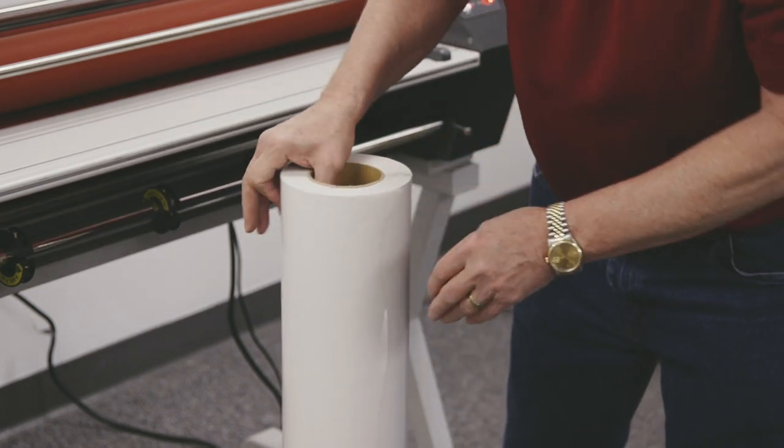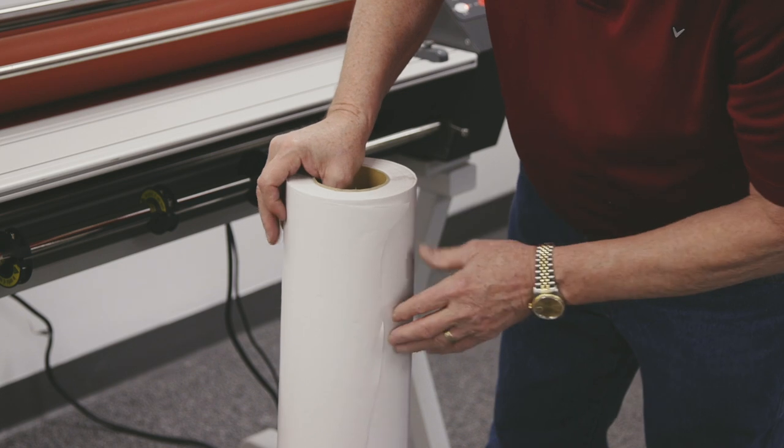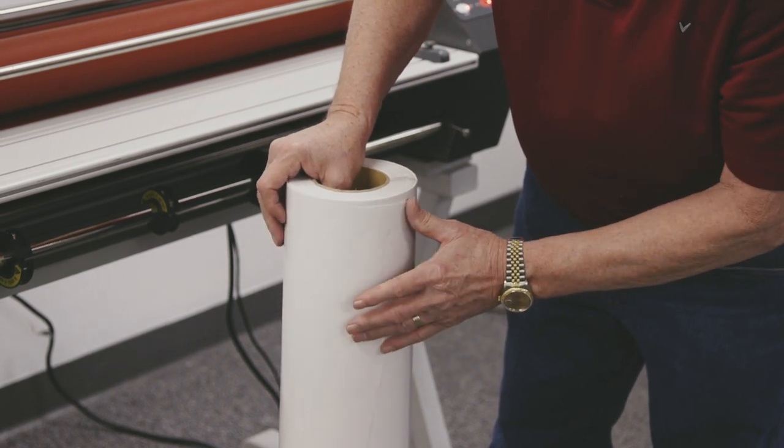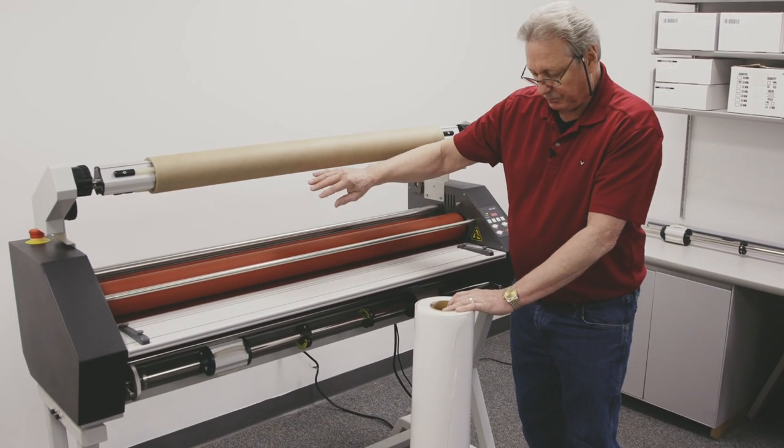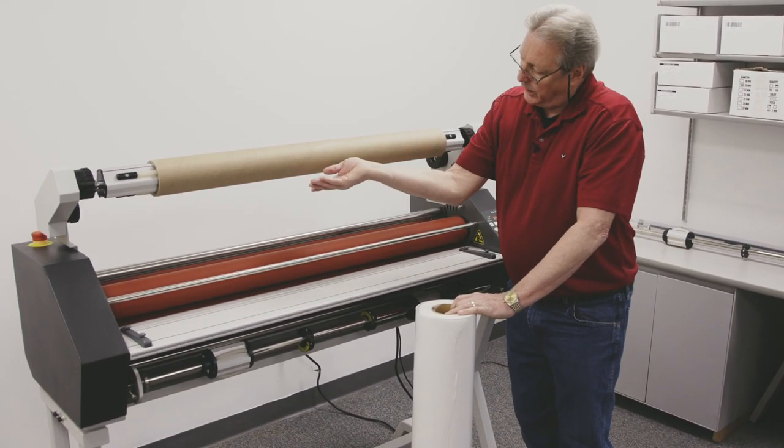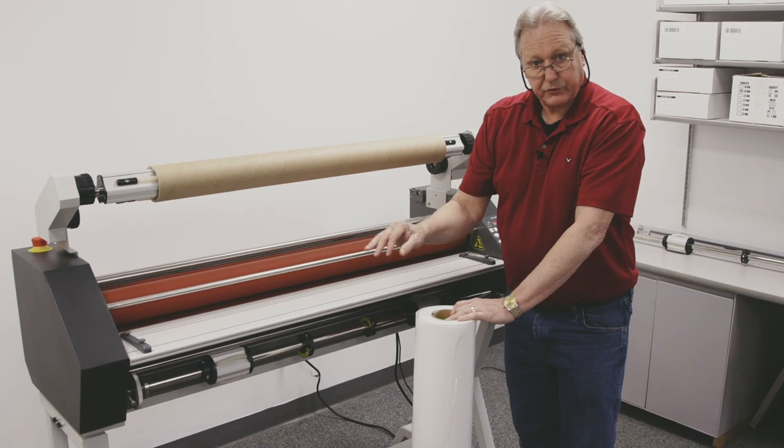This is a poly in and what we're going to do is put this on the machine so that when the film comes off it unrolls from the bottom. If it was a poly out, the film would unroll from the top.